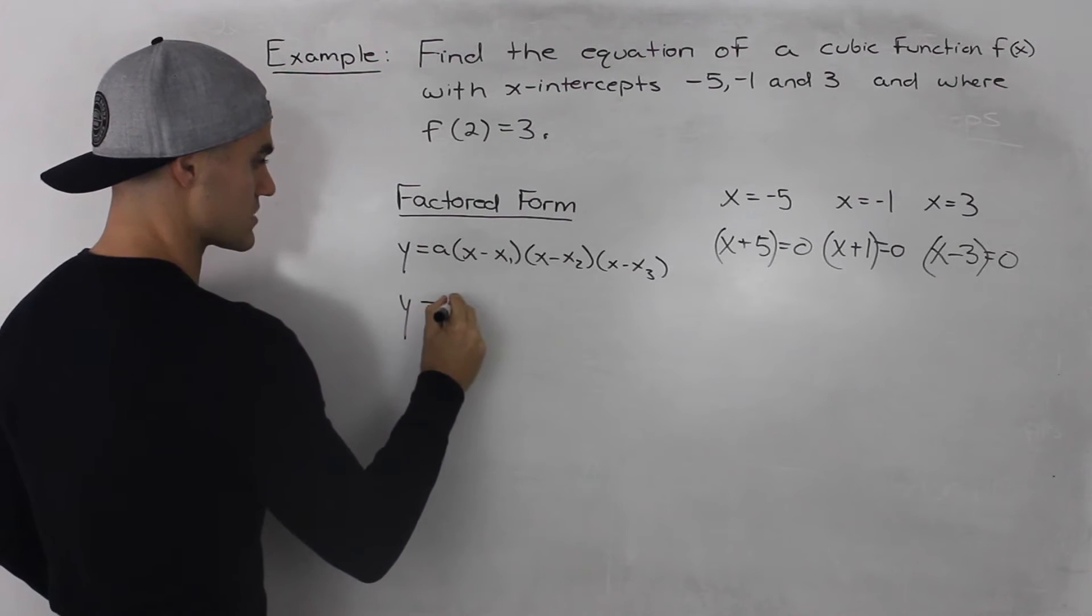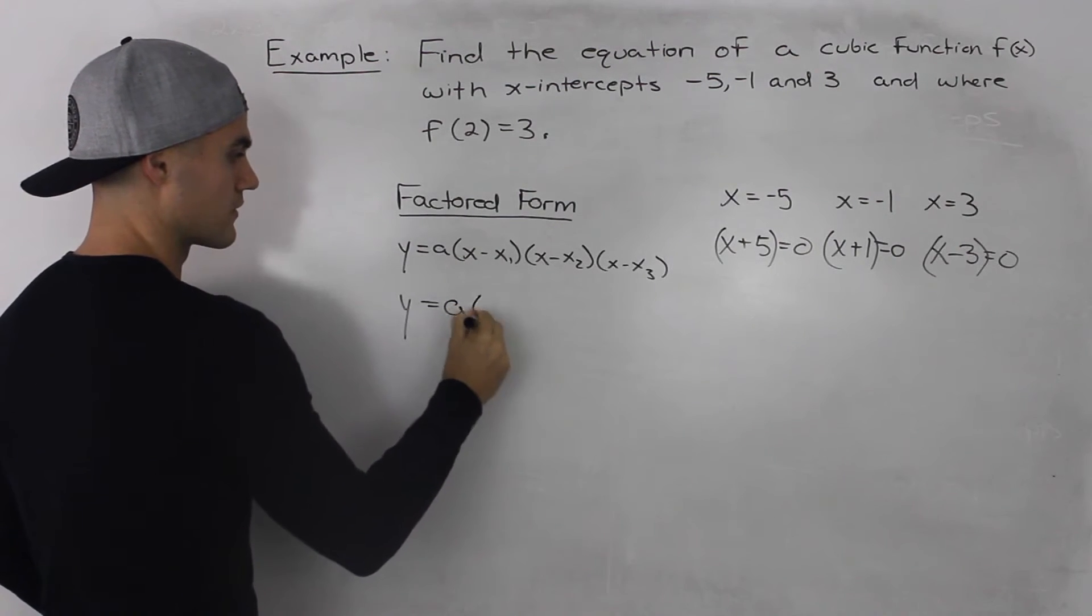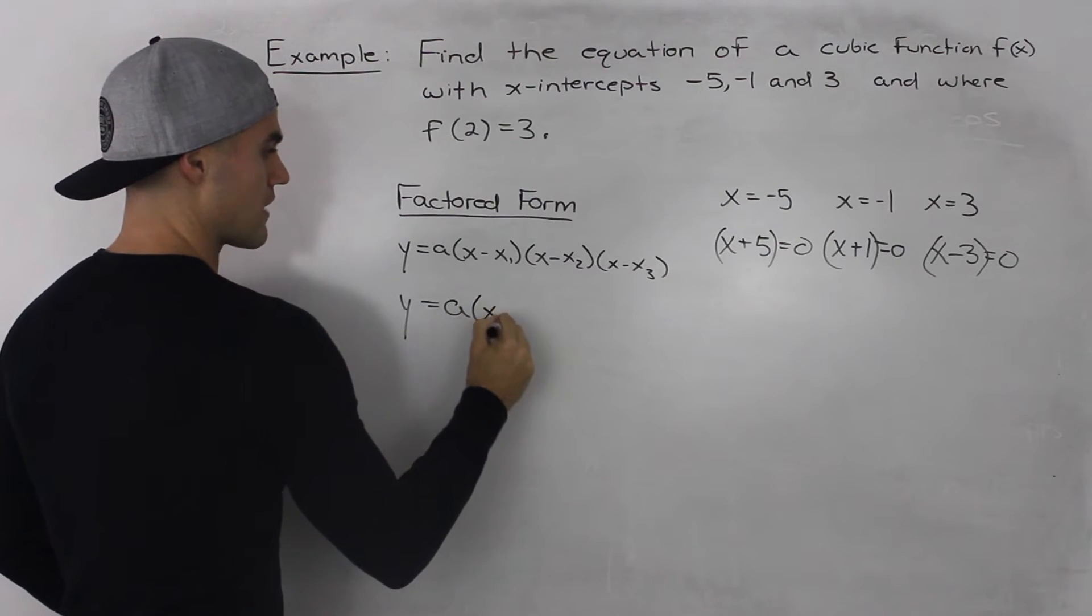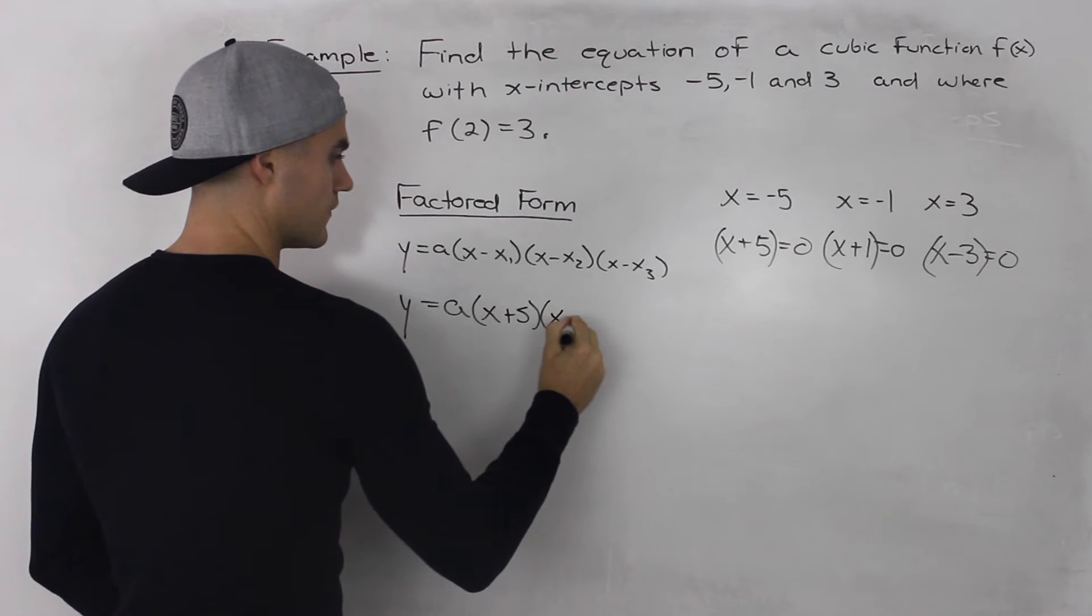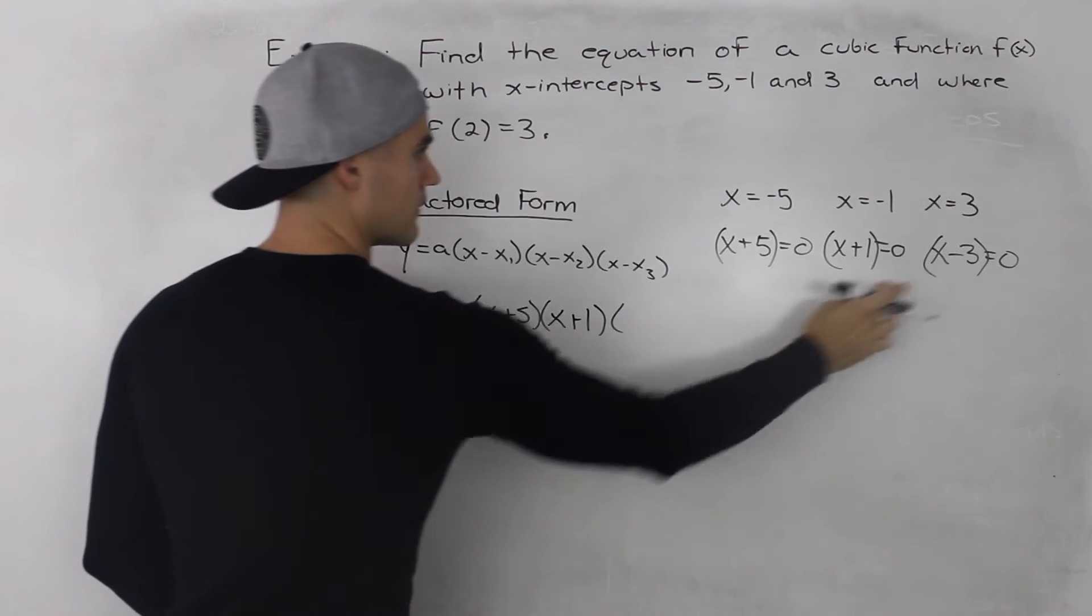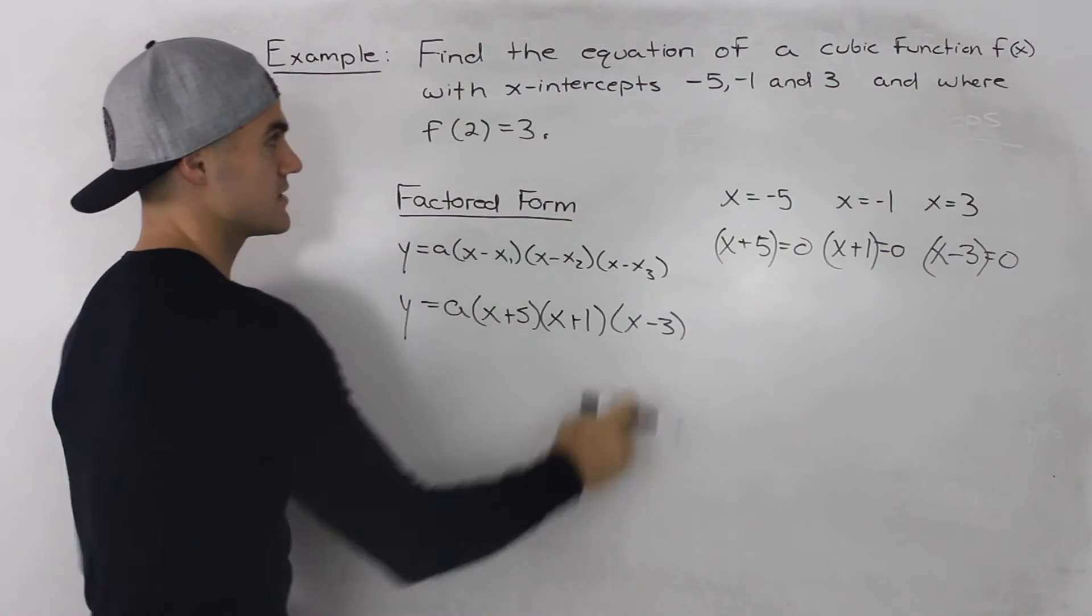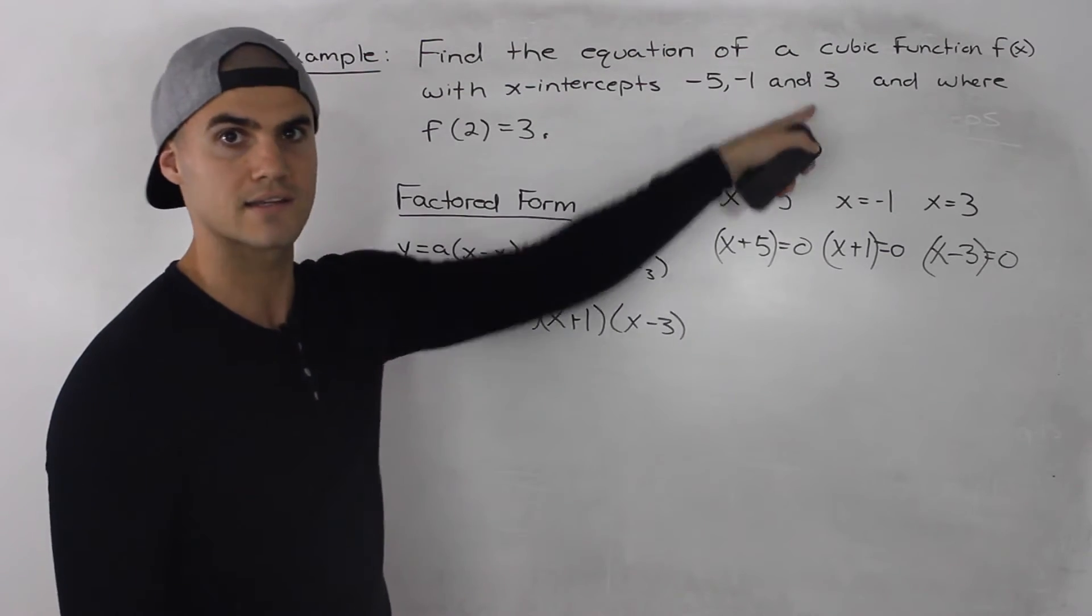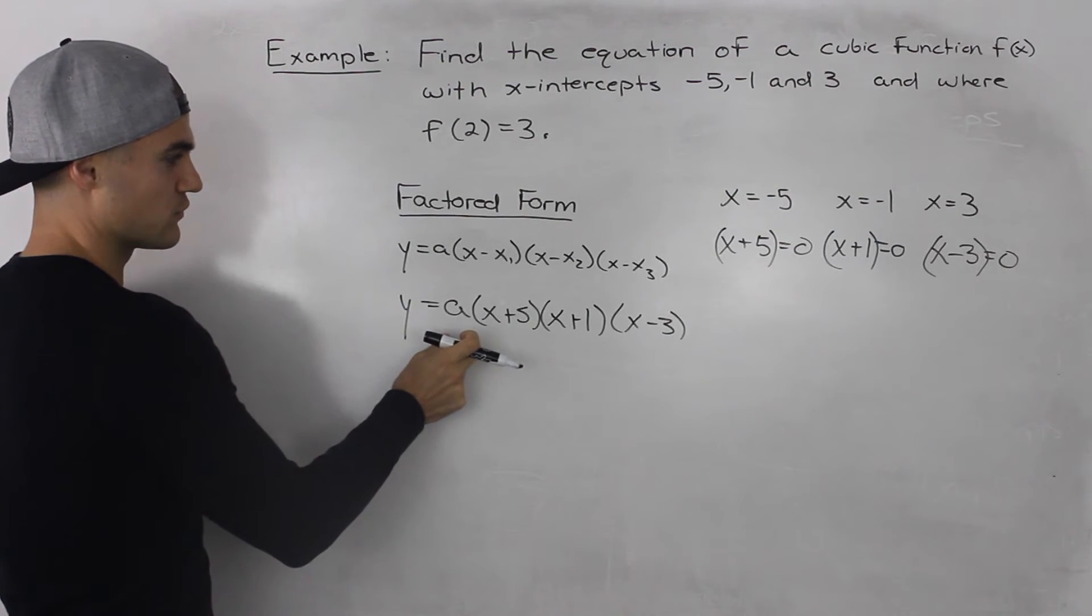So we got y = a, the constant in front, (x + 5)(x + 1) and (x - 3). So these three brackets here represent these three x-intercepts. And now we have to solve for what that a value in front would be.